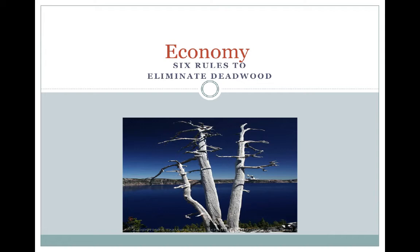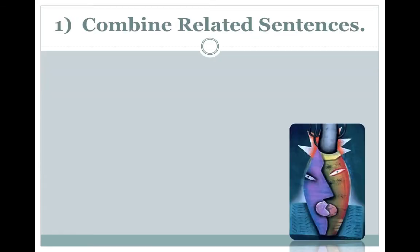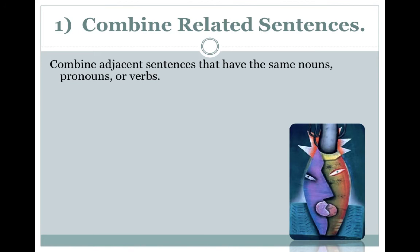The first rule is to combine related sentences. The way you'll detect these is you'll see repeated nouns, adjectives, verbs — important words that are repeated in two sentences close together. What this means is that you've got repeated content, and you can condense those by combining them and cutting out what's left.